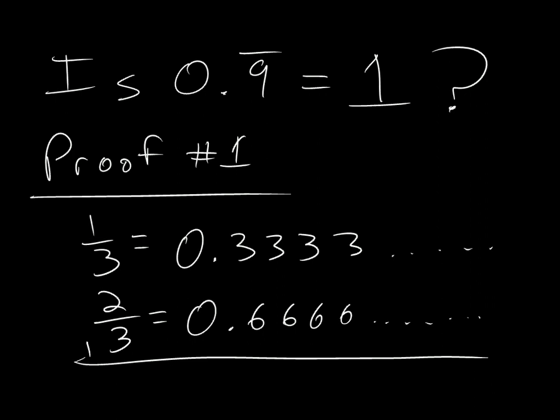Now let's add both sides here. 1 third plus 2 thirds, that's 1. And on this side I get 0.999 repeating. So, there you go.